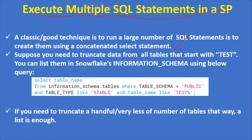You can list them in the Snowflake information_schema using the query below. Note that information_schema is created automatically the moment you create any database inside your Snowflake account, and the public schema is also created by default.